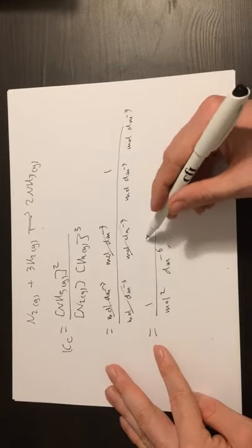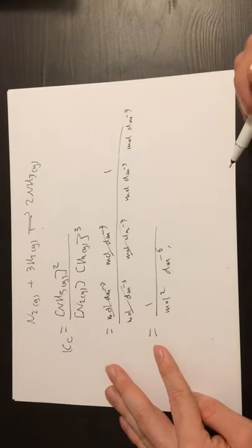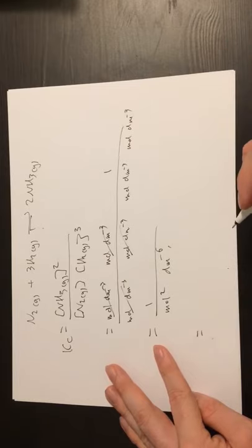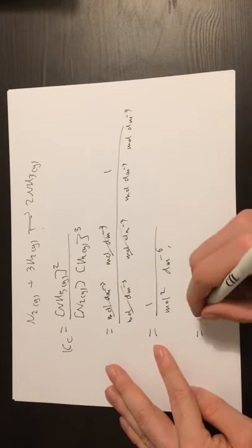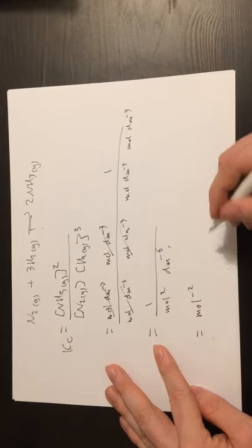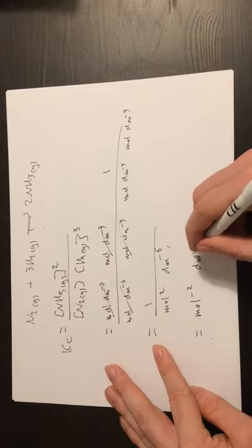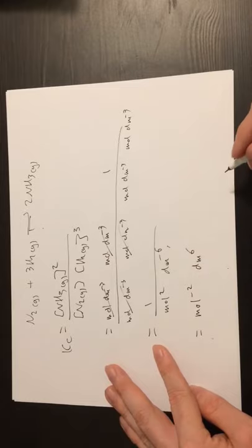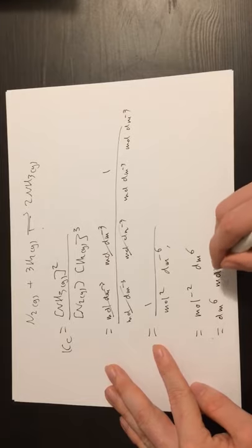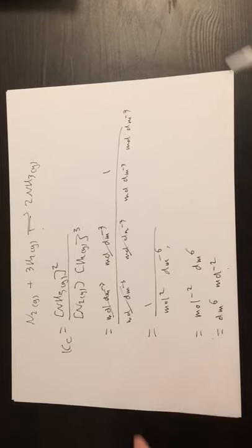We then need to flick these to the top of the fraction. And the way we do that is by reversing the sign of the power. So moles squared becomes moles to the minus two. Decimetres to the minus six becomes decimetres to the six. And then usually we put positive powers first. So I'm just going to rewrite this with my positive power first.